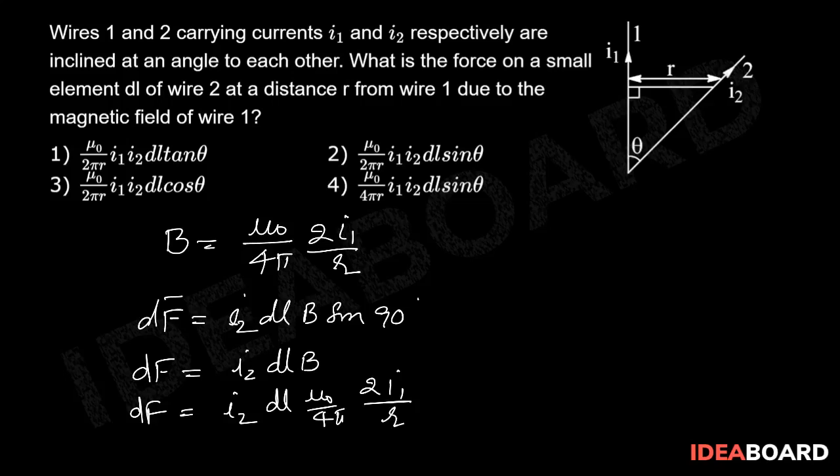This is perpendicular to wire 2. Component of force along BA is dF cos θ, which is equal to μ₀ by 2π I₁I₂ into dl cos θ divided by R.